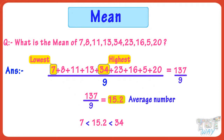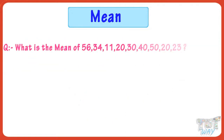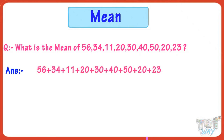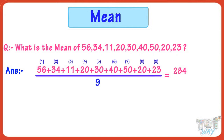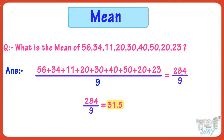Now let's take another example. Here we have another list of numbers and we have to find its mean — that is, what is the average number? Write out the list of all numbers and add them up. Adding all of them, we get 284. Now count how many numbers are there in the list — there are 9 numbers. So divide 284 by 9. On dividing, we get 31.5. So 31.5 is the average number, or the mean of the given list of numbers.